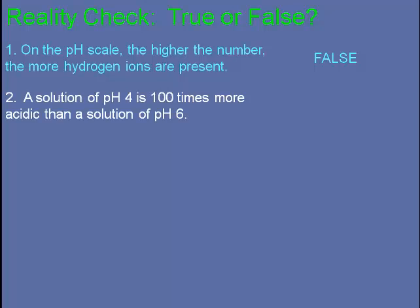A solution of pH 4 is 100 times more acidic than a solution of pH 6. This is true. The pH scale is logarithmic, so each increment or decline by a factor of 1 is actually a change in the pH by 10 times. In other words, there's 100 times more or less hydrogen present for a change of 2.